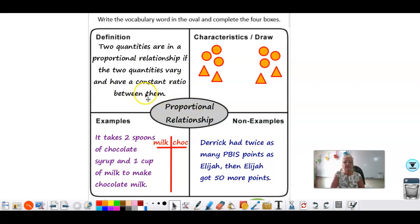The definition of a proportional relationship is a little wordy. Two quantities are in a proportional relationship if the two quantities vary and have a constant ratio between them. Feel free to pause the video if you want to write that down. Well, you should write that down because I'll be looking for it.